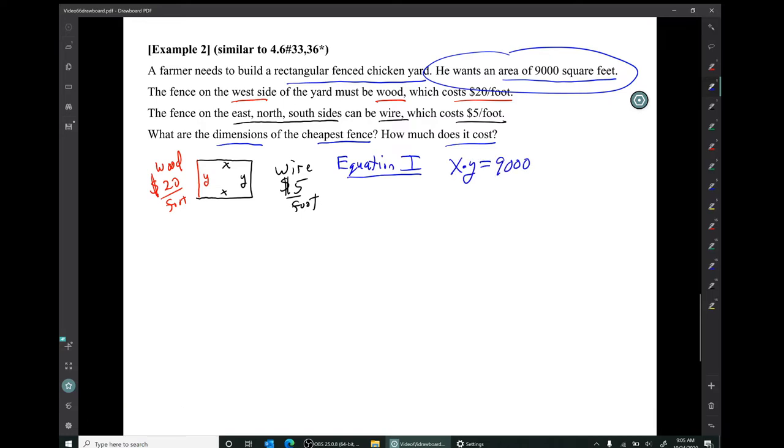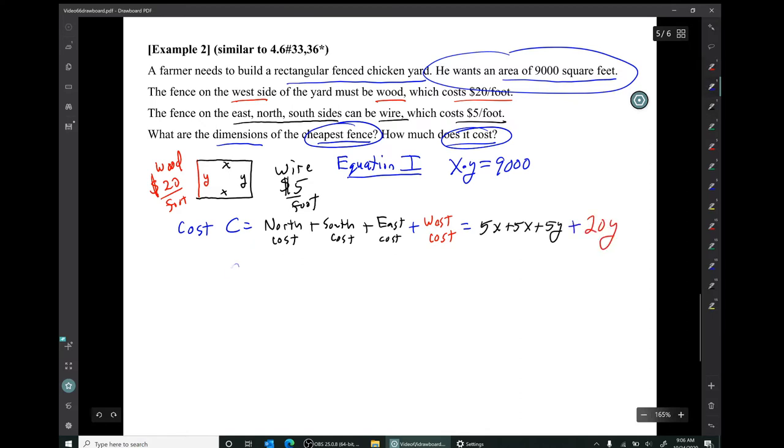Now, what else is mentioned in this problem? The cost of the fence. We're looking for the cheapest fence, so we need another equation that expresses the cost. So the cost of the fence is going to be the cost of the north side, plus the cost of the south side, plus the cost of the east side, plus the cost of the west side. Now we can figure out those costs. It's whatever the lengths of those sides are, times the cost per foot of the material for those sides. So that's what we'll call equation two.